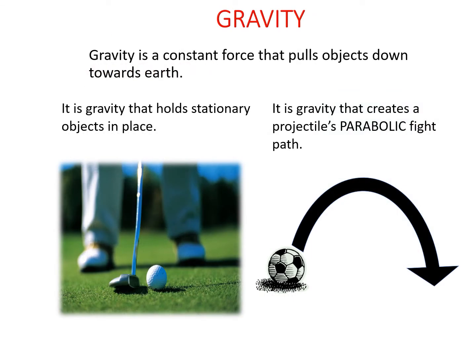Gravity — noted in red as a secondary concern for now — is a force that pulls objects back down towards Earth. For projectiles, it creates that parabolic flight path: if a ball leaves and returns to the same height, we get a true parabola. If released from a higher or lower point — like a javelin or a golf shot to a raised green — it won't be a true parabola, but it will have that characteristic arc shape.